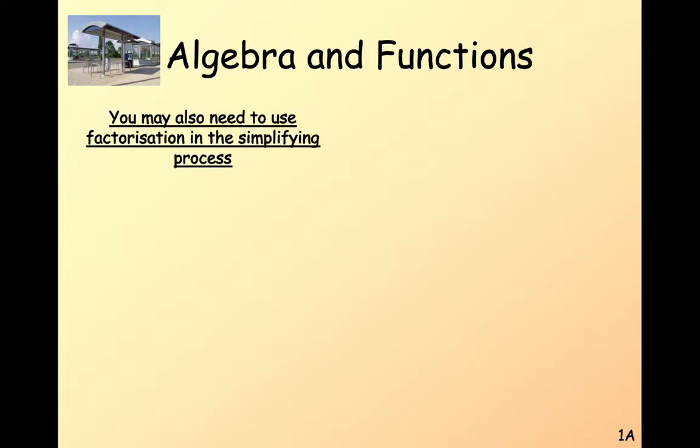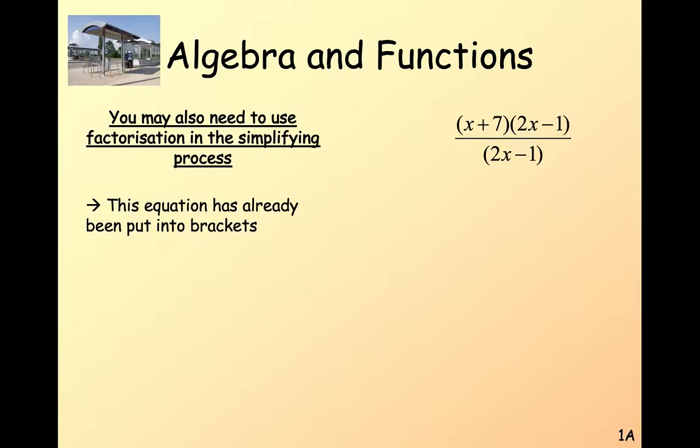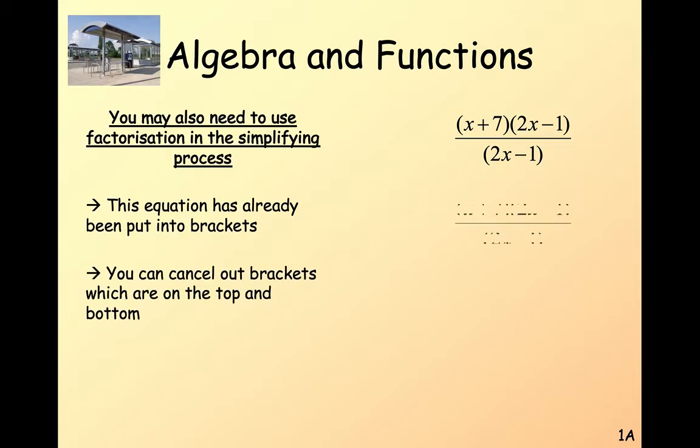Now, factorization can be really important in this. So if we look at something like this, where it's already factorized, it makes sense. That top part, the numerator, means X plus 7, all in a bracket, multiplied by 2X minus 1. So we can clearly see that we would divide by 2X minus 1. That seems pretty straightforward.